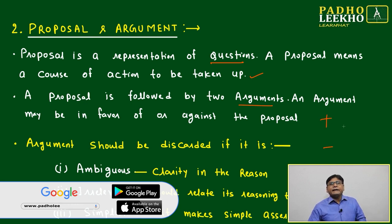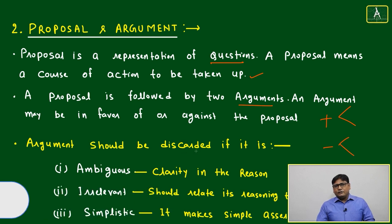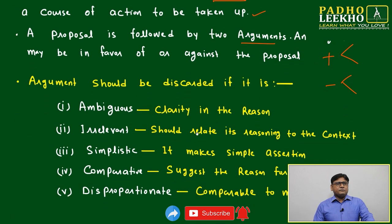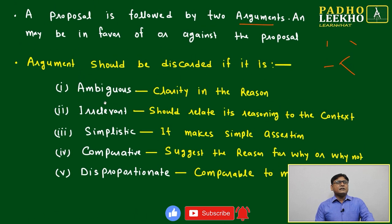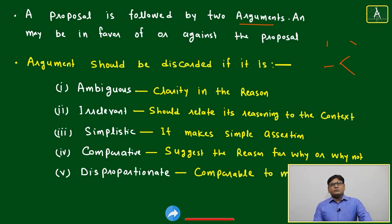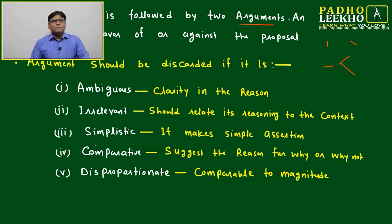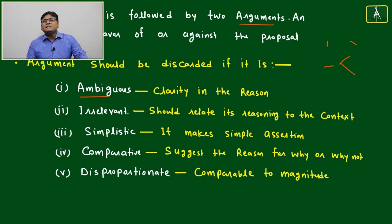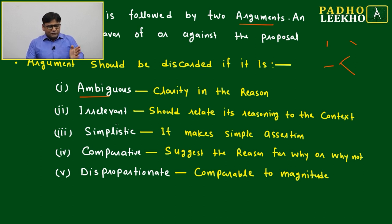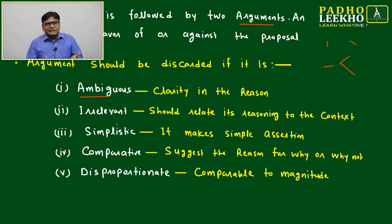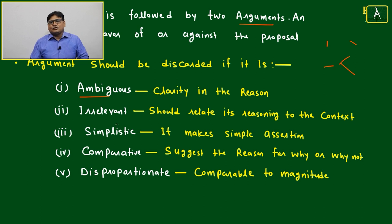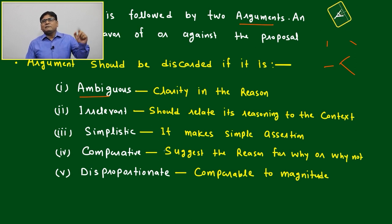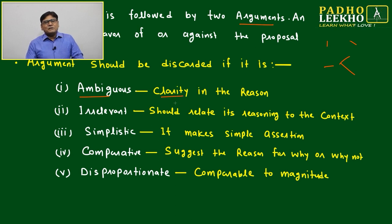Both sides — positive or negative — can be defined as strong and weak. An argument should be discarded if it falls into certain five categories. An argument cannot be ambiguous; if any ambiguity is there, then we cannot accept that argument as valid. If validity itself is not there, then why would we define it as strong or weak? First it should be valid, then only we can define it as strong or weak.